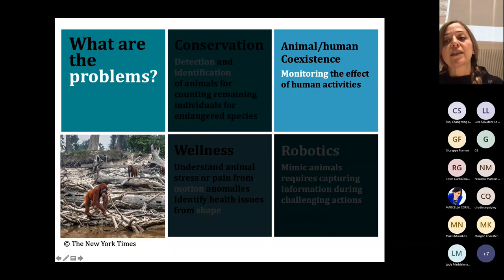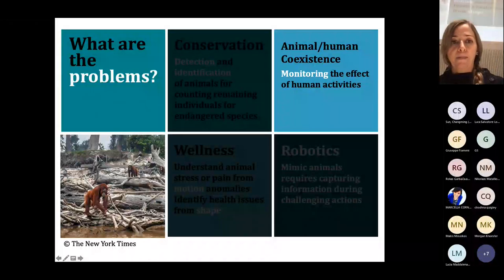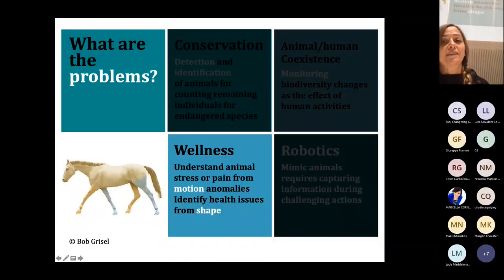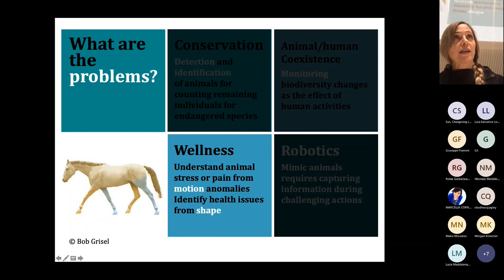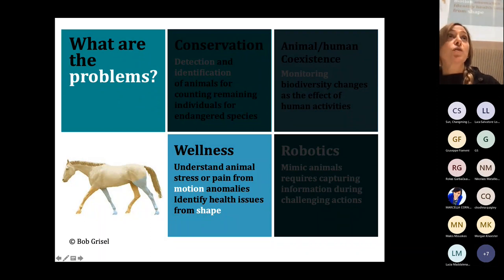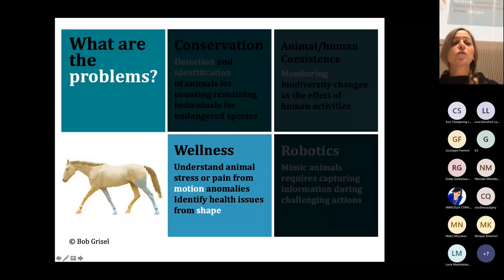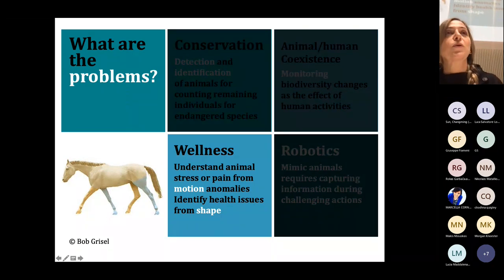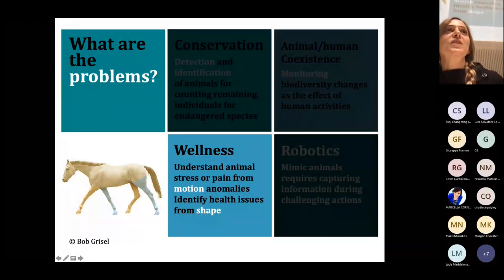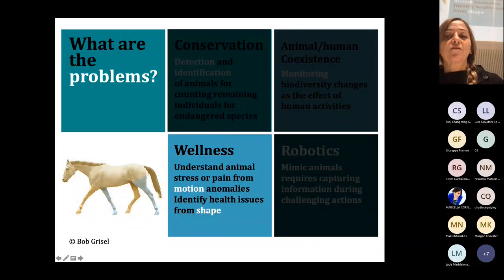In human-animal coexistence, it's very important to monitor the effects of human activities on ecosystems, which requires understanding changes in animal presence and behavior. For wellness, we need to understand animal pain and act before injury — this is especially important for animals like horses that can hardly recover. There is also the problem of automatically identifying health issues from shape, for example in wild environments.